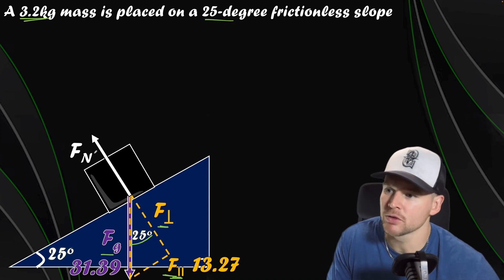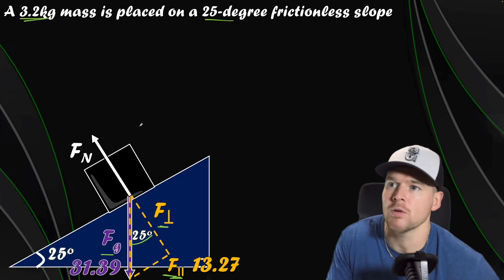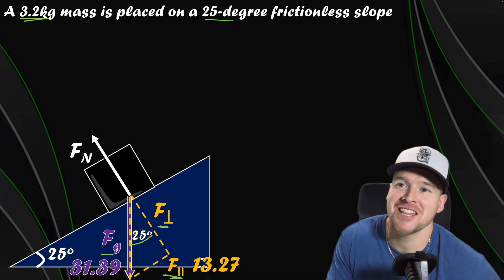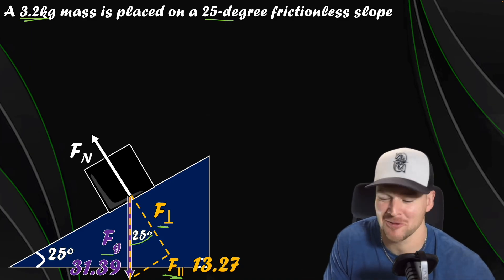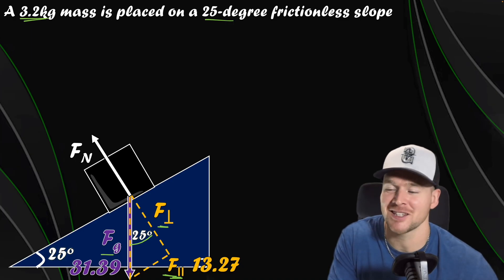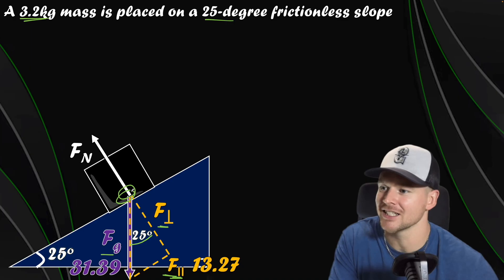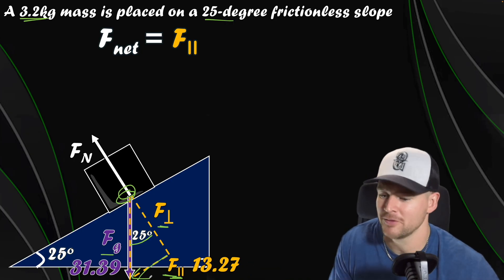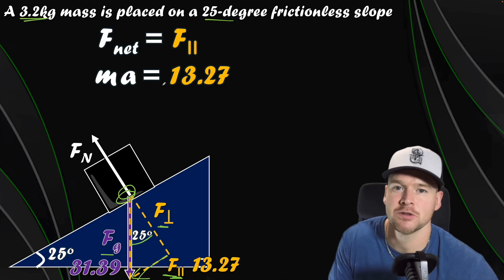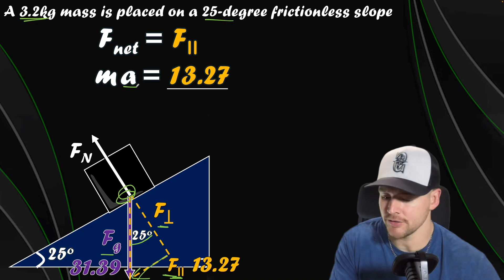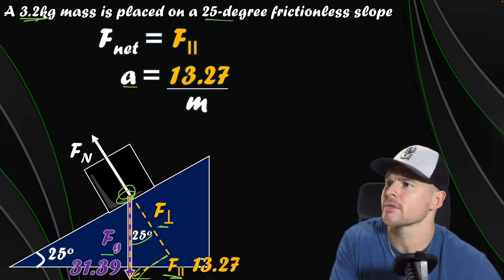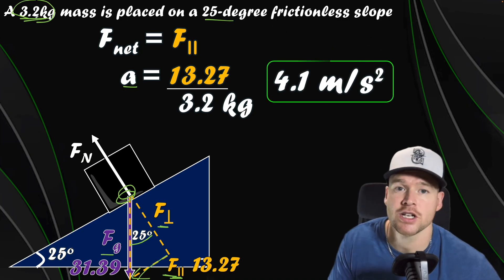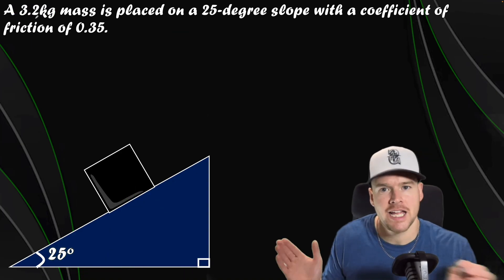We have the normal force, which equals F-perpendicular, but we don't need it yet. We're solving for the acceleration down the ramp — acceleration in the parallel direction. Looking at forces in the parallel direction: F-net equals F-parallel, since there's no friction and no applied force. So MA = 13.27 N. Dividing by the mass of 3.2 kg gives an acceleration that rounds to 4.1 m/s².